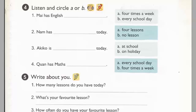Three. Hello, Akiko. It's nice to talk to you again. Nice to talk to you too, Mai. Do you have school today? Yes, but not now. I'll go to school in the afternoon. How about you? I'm on holiday. How many lessons do you have today? Four: English, Vietnamese, Maths, and Art.